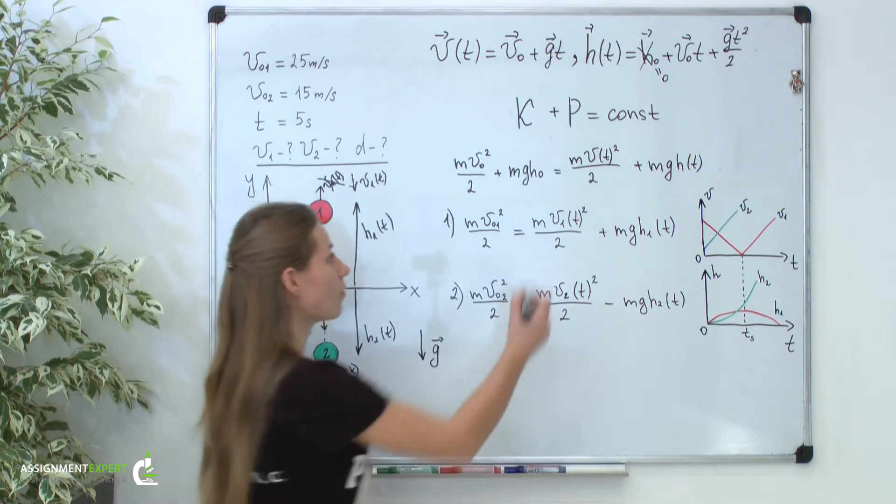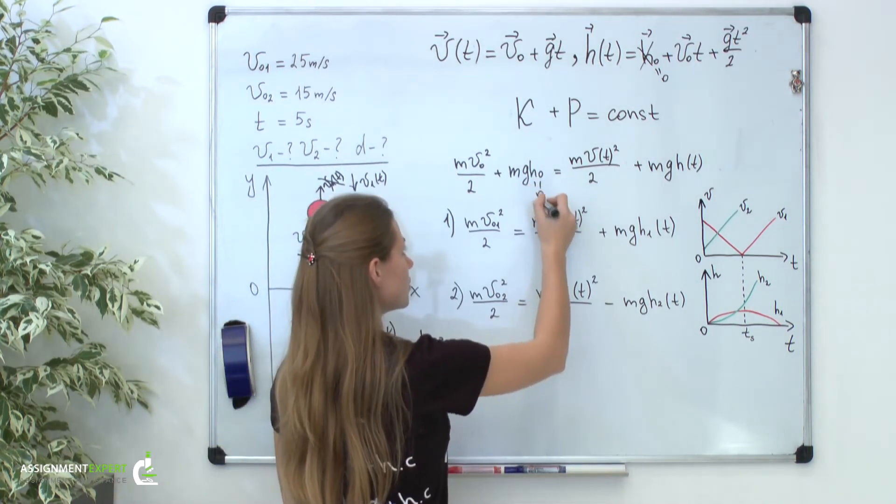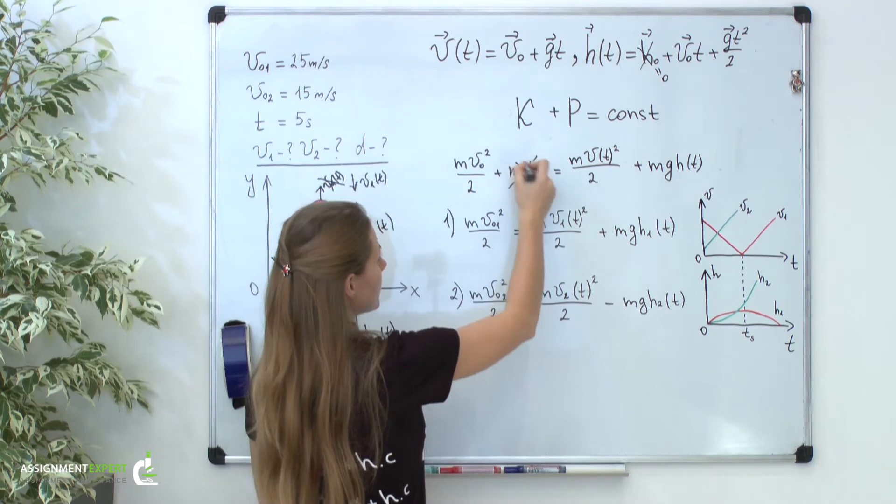As you remember, our initial distance is zero. So our equation is a little bit simplified.